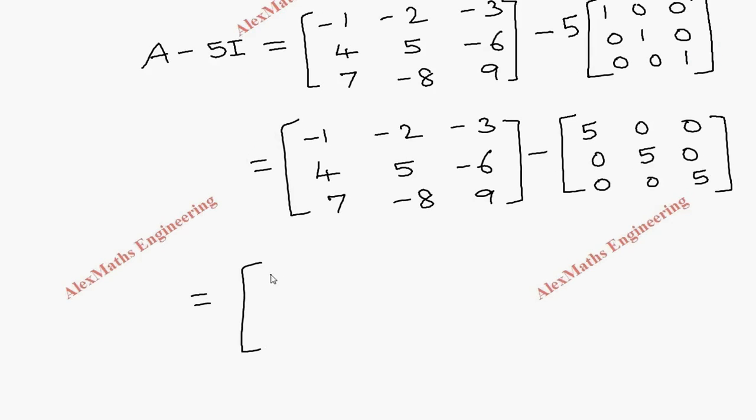The first element will become minus 1 minus 5, and the other elements are minus 2 minus 0, minus 3 minus 0, as it is.